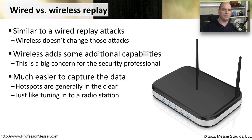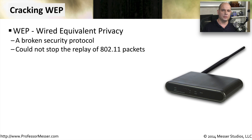It's very easy for the bad guy to tune in to the SSID of the wireless access point and listen to all of the information going by. That's a perfect place to gather information that you can then use for a replay attack. The cryptographic problems of the WEP encryption protocol were really something that we were able to take advantage of because of a replay issue.